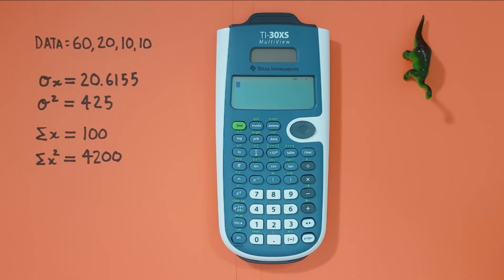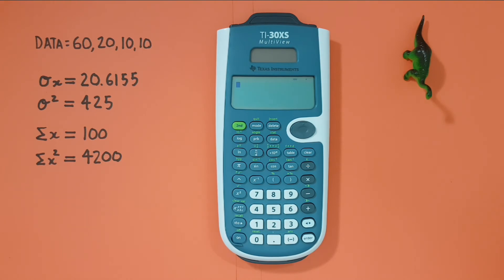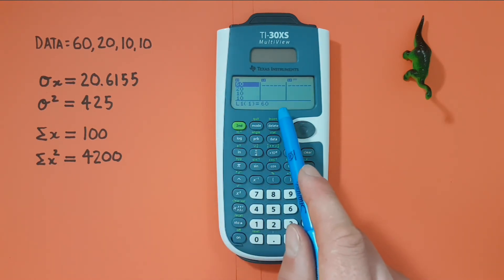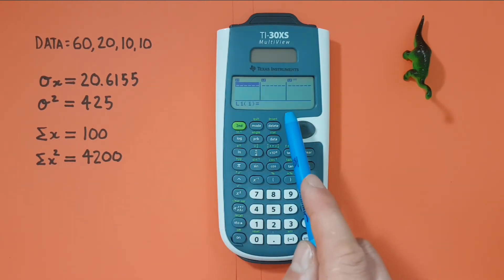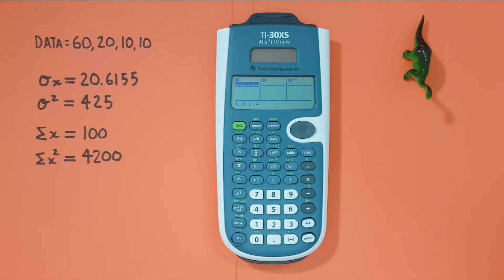If we have a data set with variables that occur multiple times, like say the 10 in our example, and we don't want to enter them all individually, we can use the list2 and frequency option to do this. So if we go back into our data, here's our data set and we'll clear that for now. We want to re-enter that, but we don't want to list this 10 multiple times. We want to just be able to put that in there once.